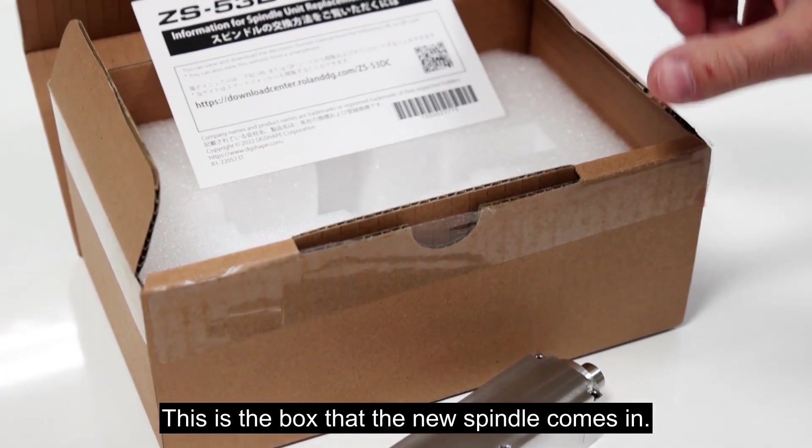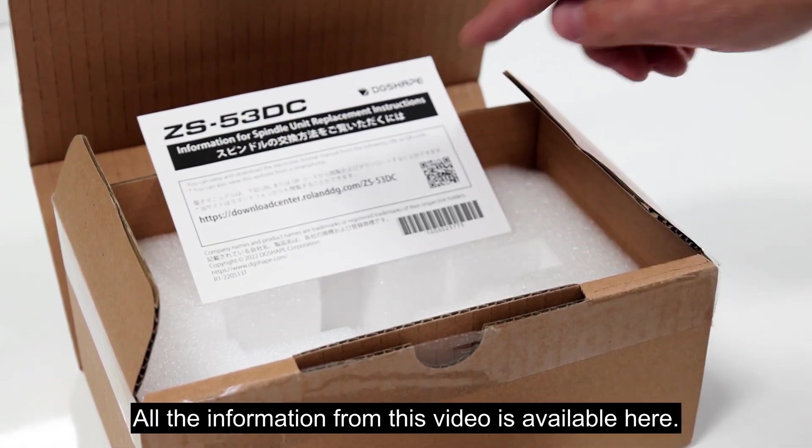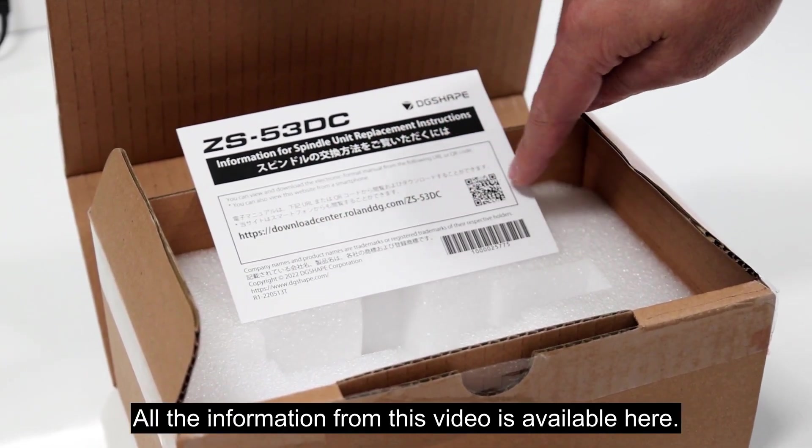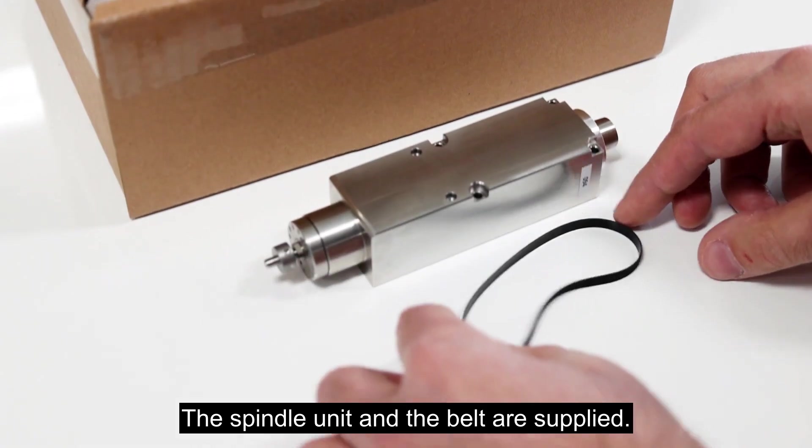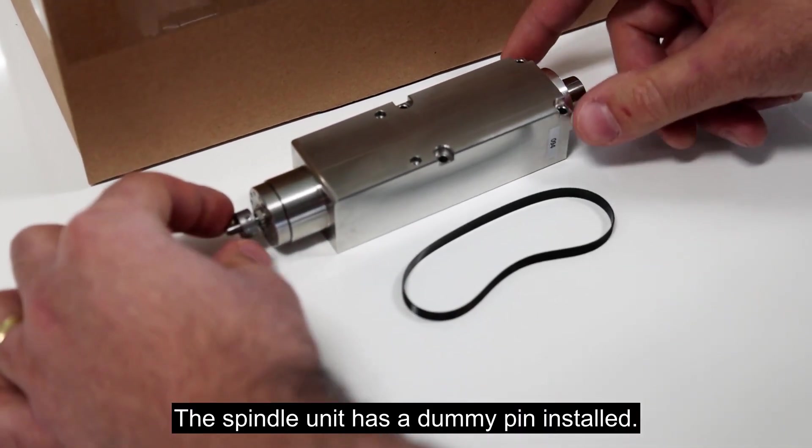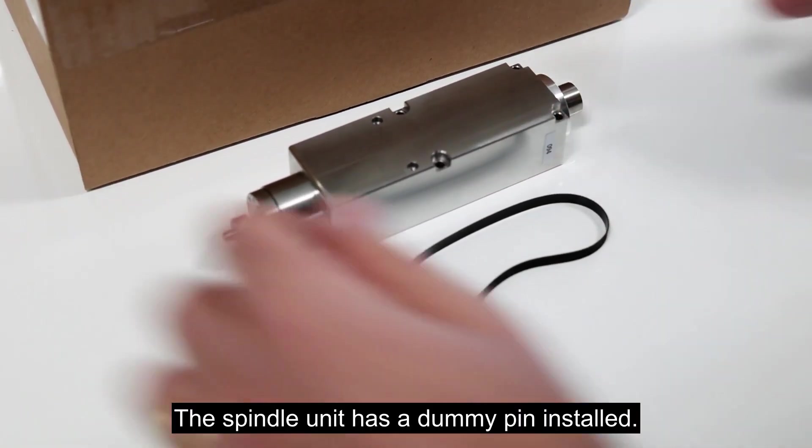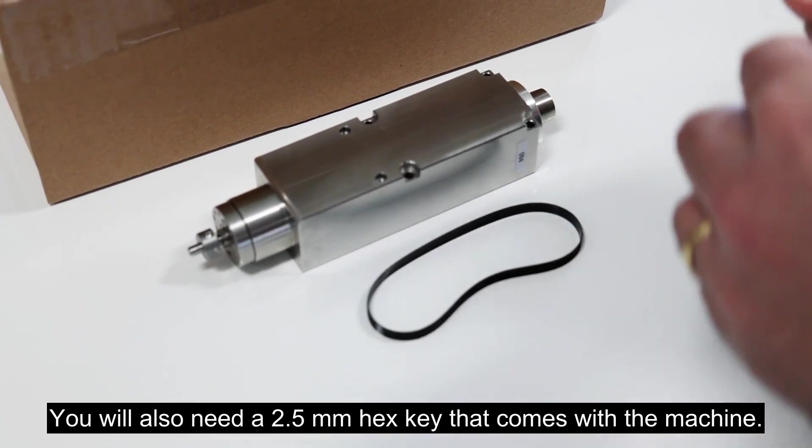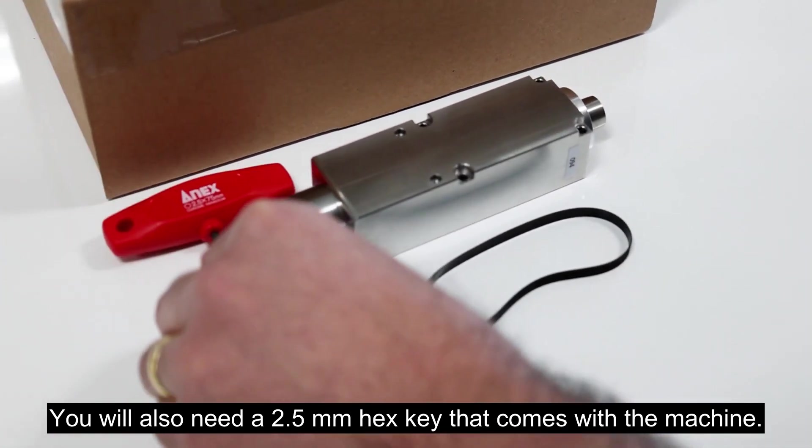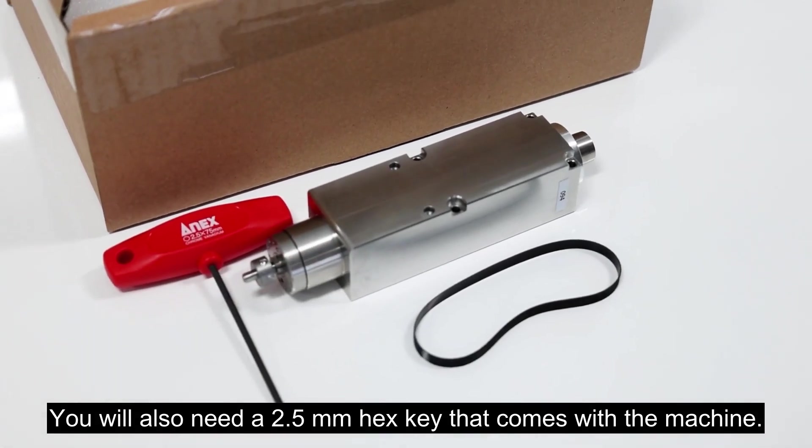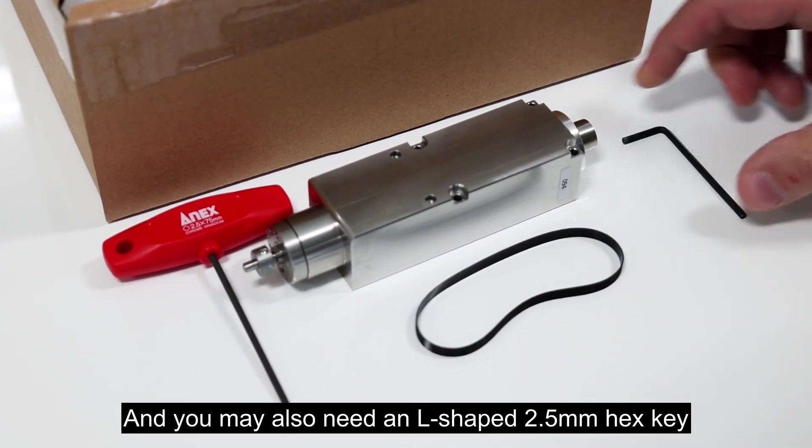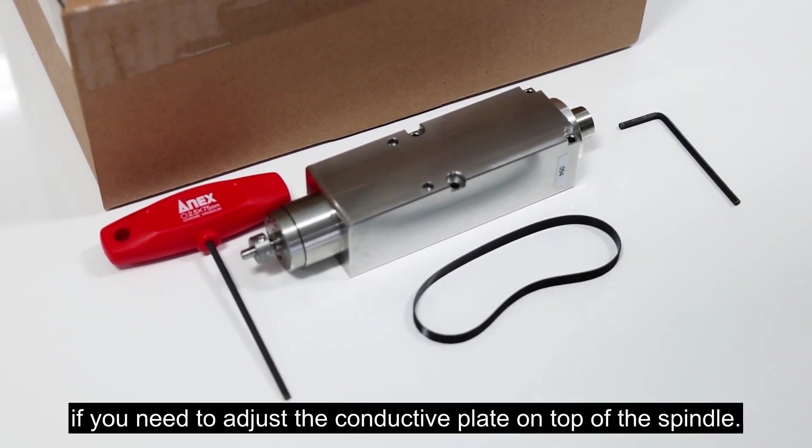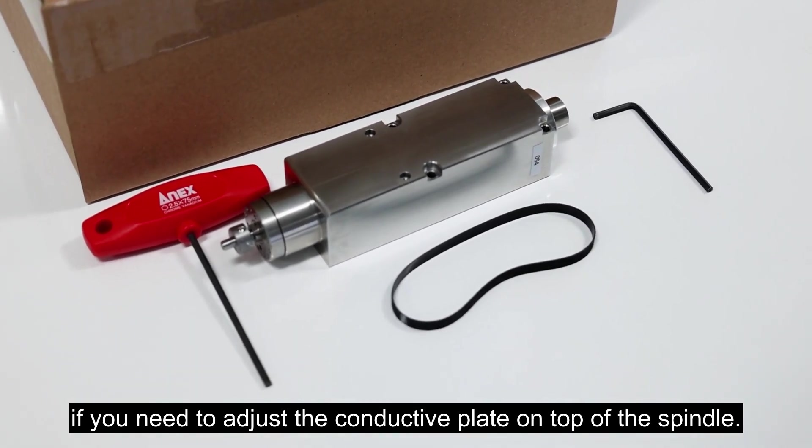This is the box that the new spindle comes in. All the information from this video is available here. The spindle unit and the belt are supplied. The spindle unit has a dummy pin installed. You will also need a 2.5 millimeter hex key that comes with the machine. And you may also need an L-shape 2.5 millimeter hex key if you need to adjust the conductive plate on top of the spindle.